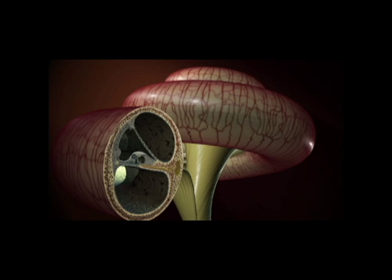The spiral modiolar artery and vein travel in the modiolus and follow the spiral of the cochlea. Arterioles branch off from the spiral modiolar artery, forming capillary beds in the osseous spiral lamina.